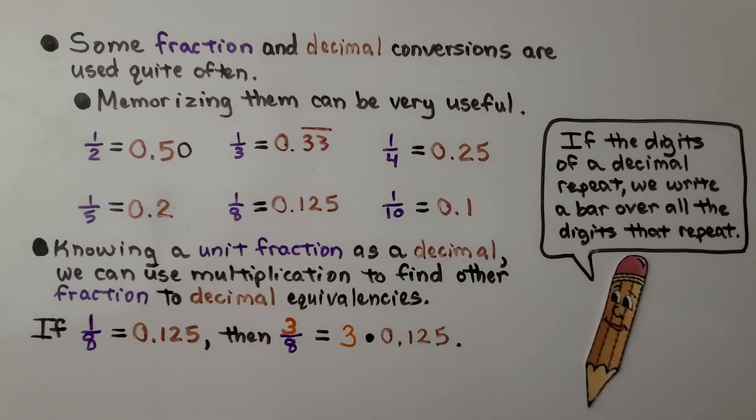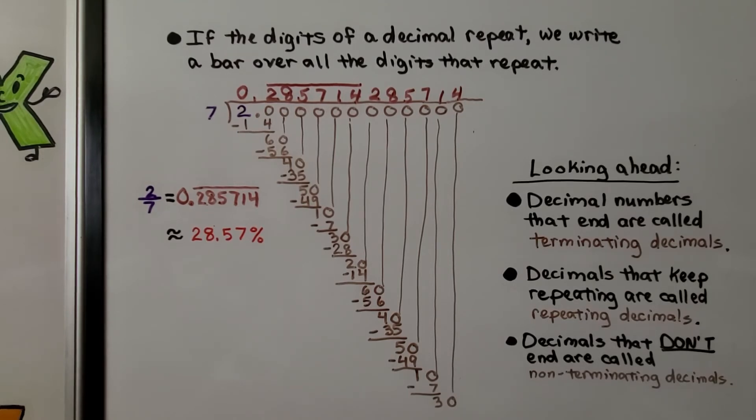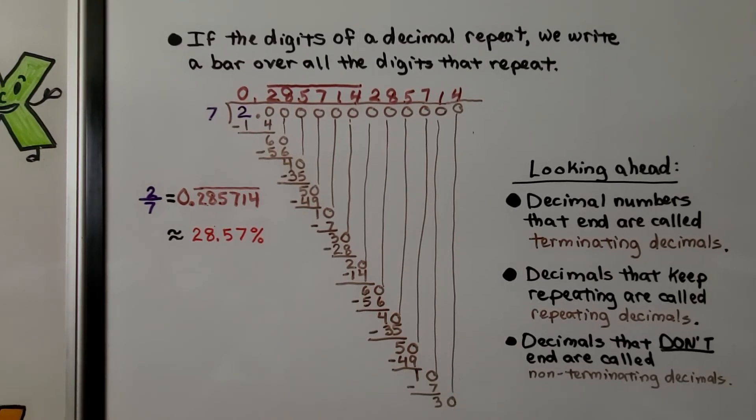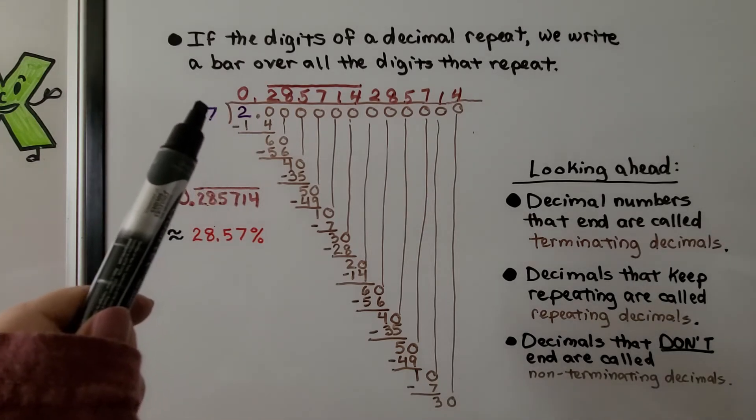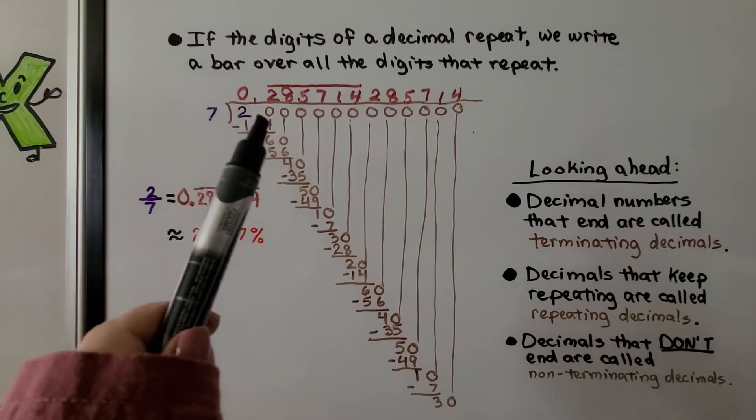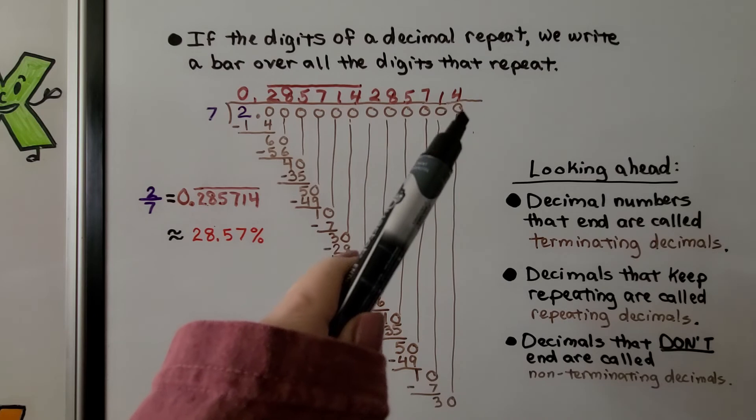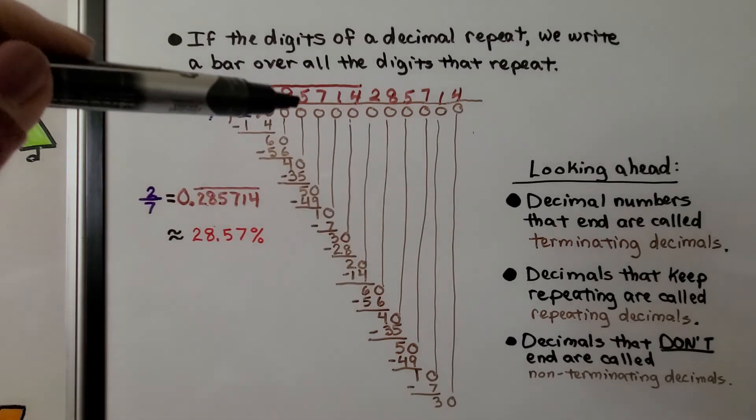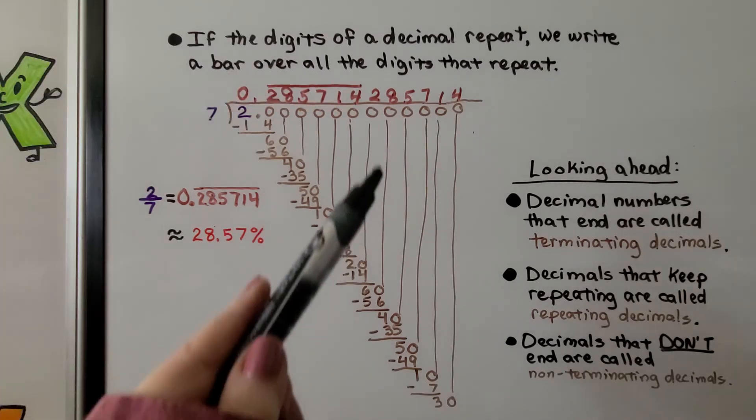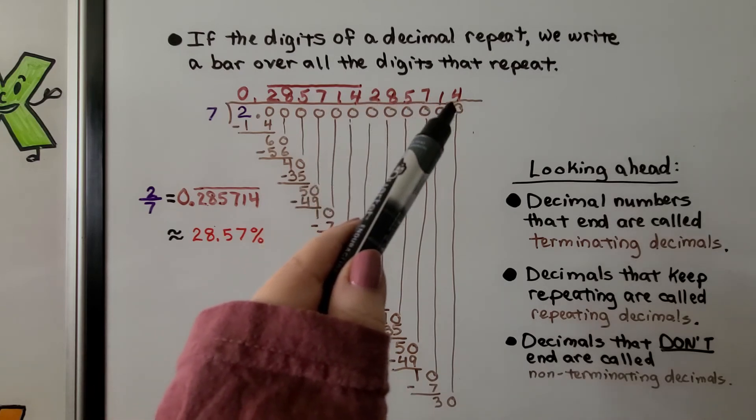Let's talk about this bar over these decimal digits. If the digits of a decimal repeat, we write a bar over all the digits that repeat. For two-sevenths, how many times can seven fit into two? I got this very long quotient that actually would keep on going, because in the quotient I got 2, 8, 5, 7, 1, 4. And then as I kept dividing and adding more zeros, I got 2, 8, 5, 7, 1, 4 again.